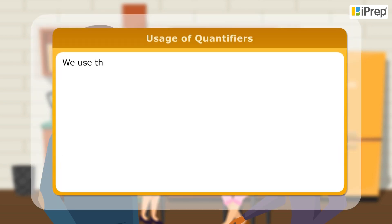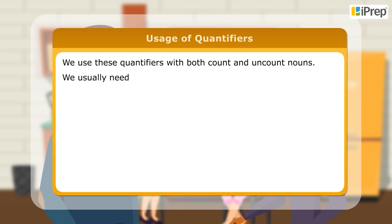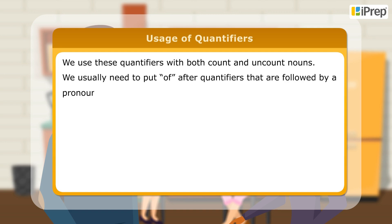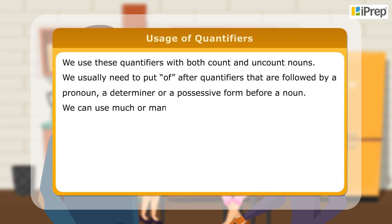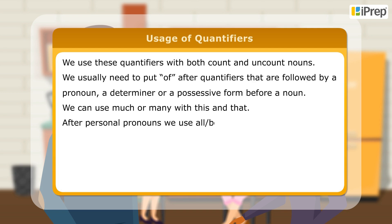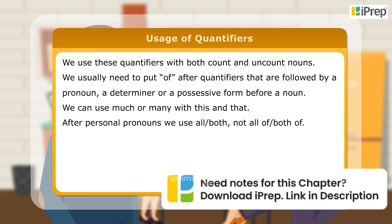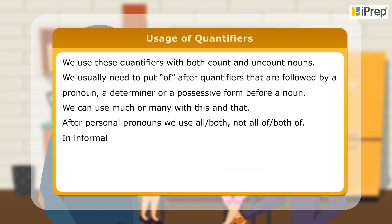Usage of quantifiers: We use these quantifiers with both count and uncount nouns. We usually need to put 'of' after quantifiers that are followed by a pronoun, a determiner, or a possessive form before a noun. We can use 'much' or 'many' with 'this' and 'that'. After personal pronouns, we use 'all' or 'both', not 'all of' or 'both of', in informal context.